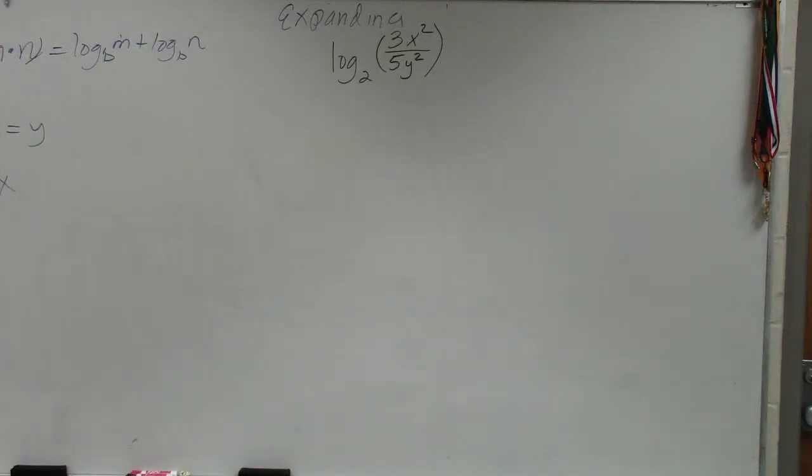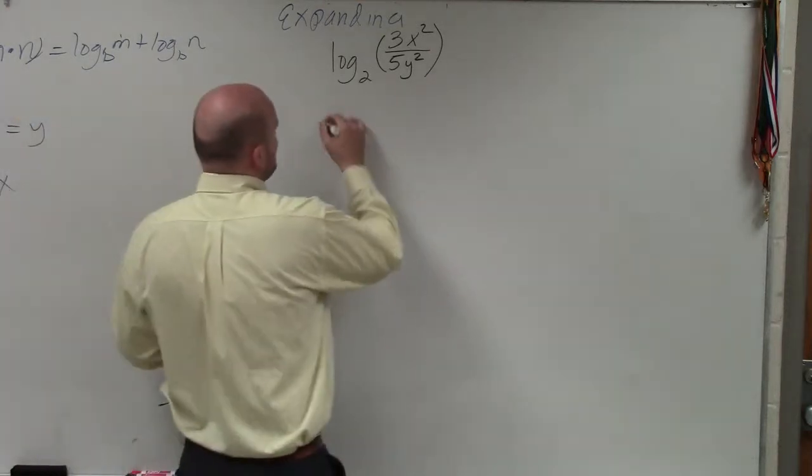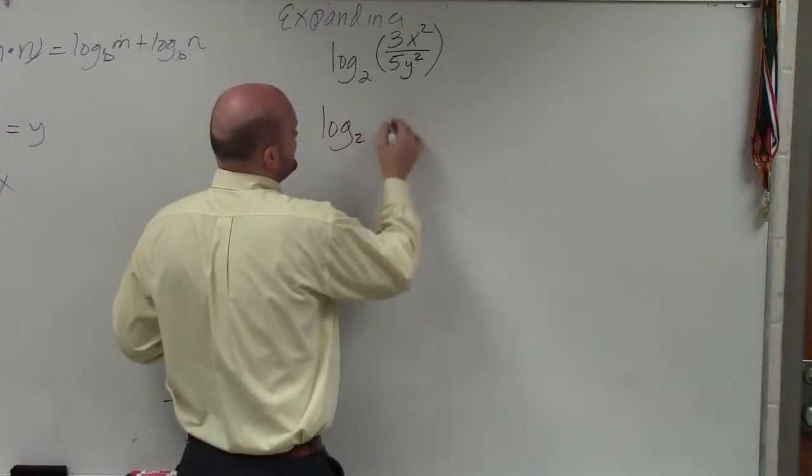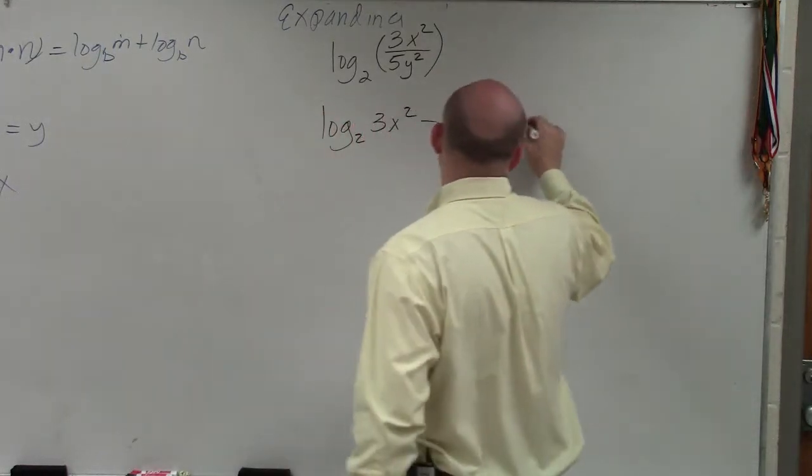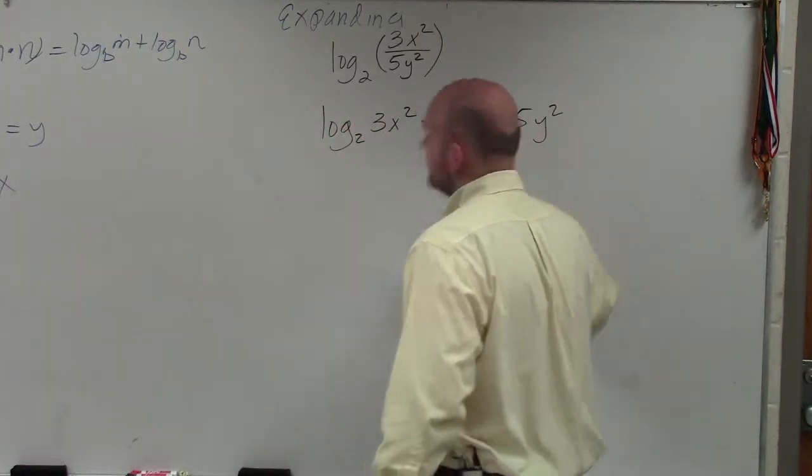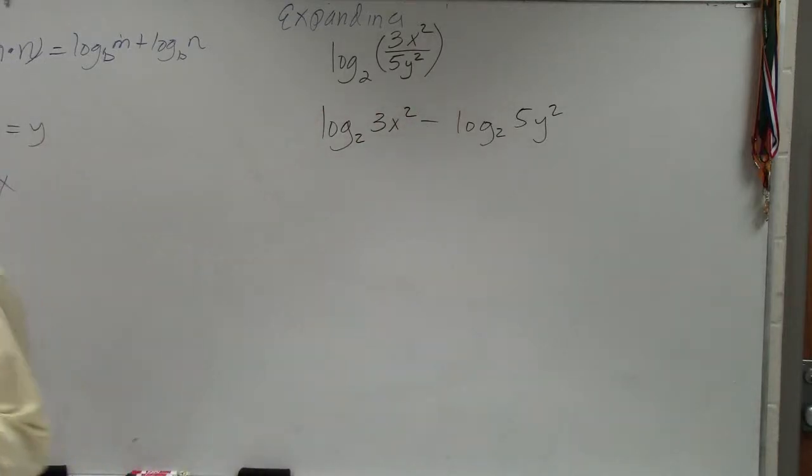So what we're going to do when we have multiplication and the product is make sure we separate using the quotient first. The first thing I'm going to do is rewrite this as log base 2 of 3x² minus log base 2 of 5y². I separate them using the quotient rule. When you have the division of two terms, you can rewrite that as two logs subtracting.